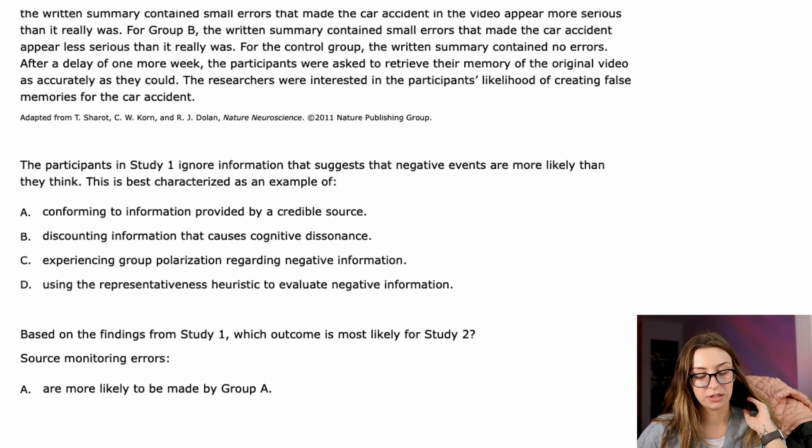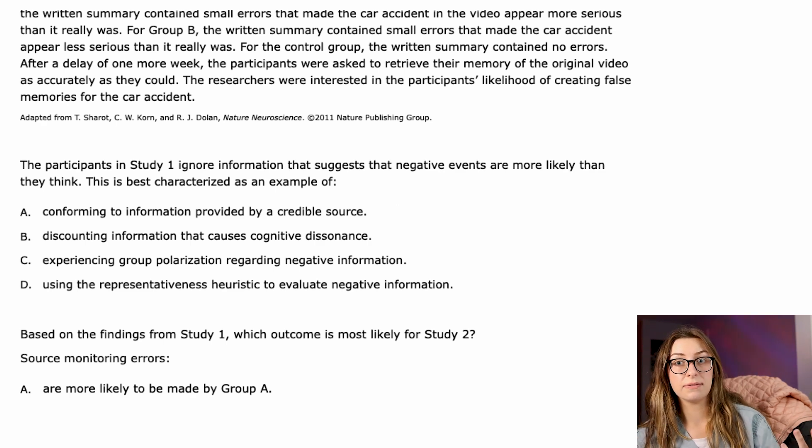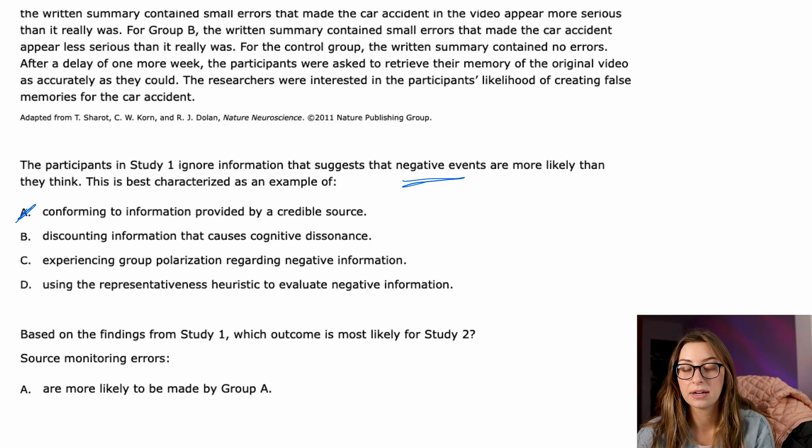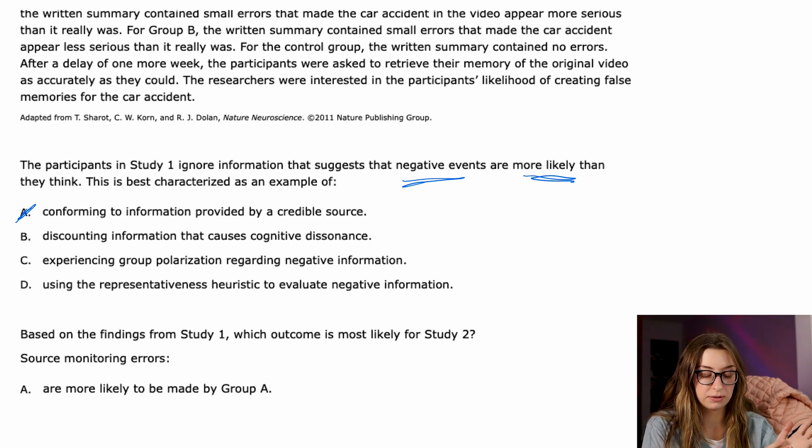But to actually answer this question, someone choosing not to believe that negative events are more likely than they think, is that an example of conformity? It would be an example of conformity if everyone around them doesn't believe that these negative life events happen very often. That's not really what's happening here. They're discounting information that causes cognitive dissonance. By definition, a negative life event is something that we don't want to believe is going to happen to us. And so if we are to think that these are more likely, that could create some cognitive dissonance because it is not in alignment with what they currently think. That's the important part of cognitive dissonance and how it relates to the study. People are thinking one way, and then they're being told information that is opposite or that's not in line with what they think.